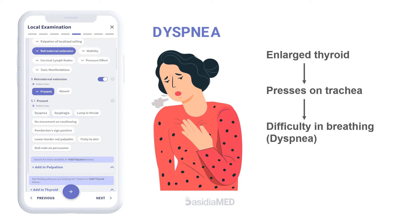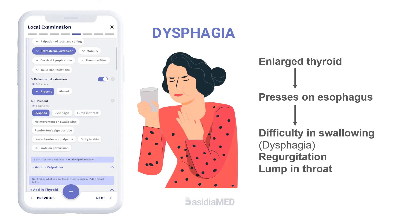The patient often complains of difficulty in breathing due to pressure on the trachea from the enlarged thyroid. The thyroid may also be enlarged enough to obstruct the esophagus, resulting in dysphagia.